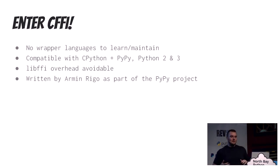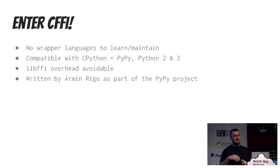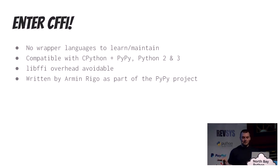So CFFI is a great solution when you want to call out to a C library, you don't want to write a third wrapper language, you want it to work in CPython and PyPy across Python 2 and 3, and you want to avoid the runtime overhead of ctypes and libffi. CFFI was written by Armin Rigo mostly as part of the PyPy project.